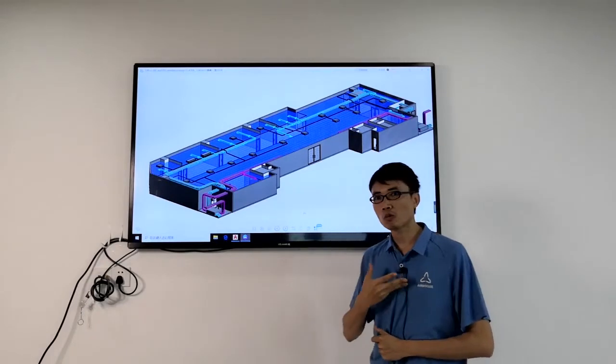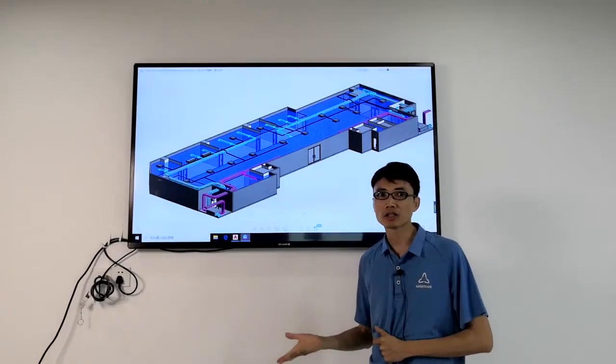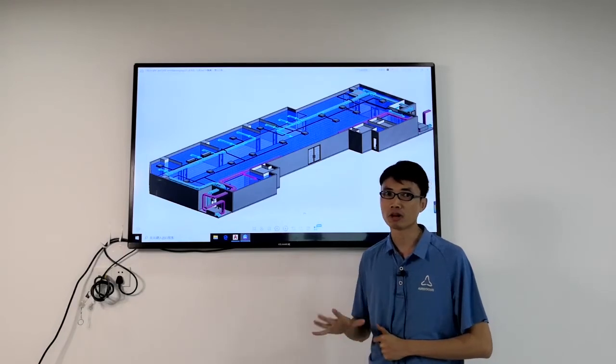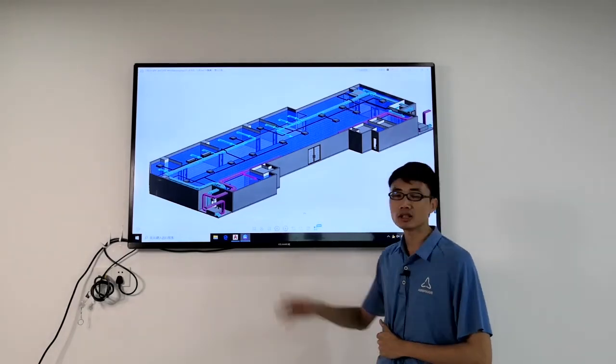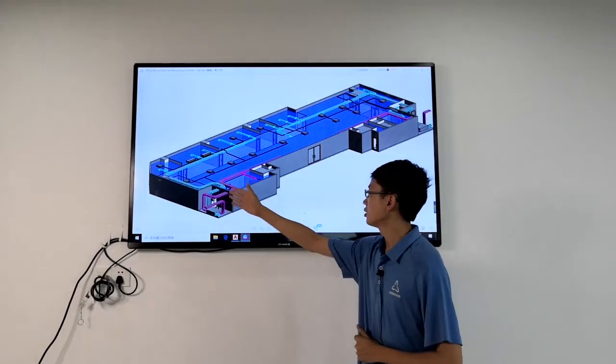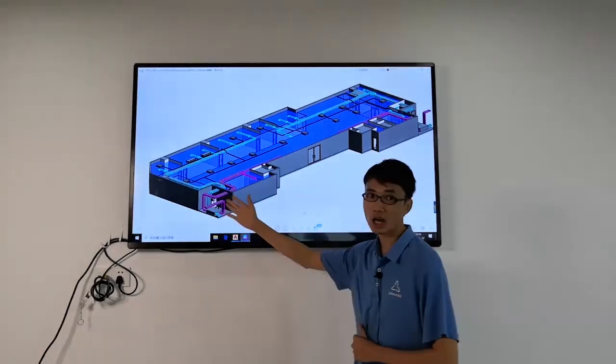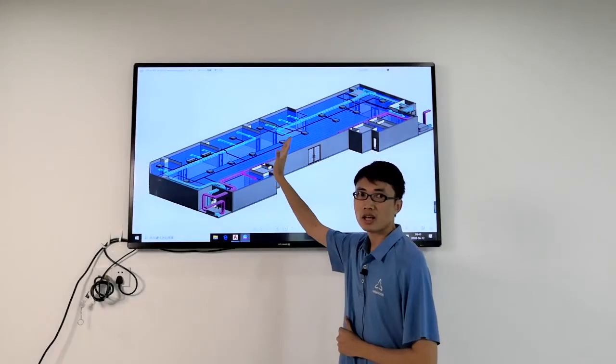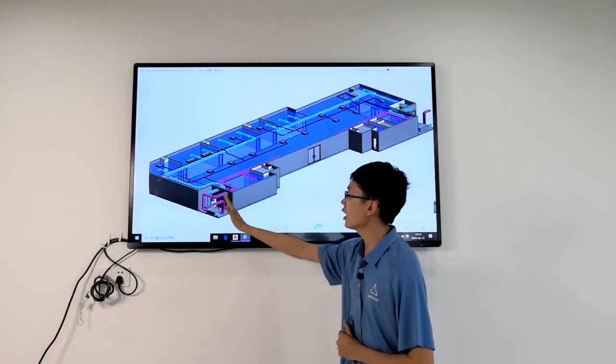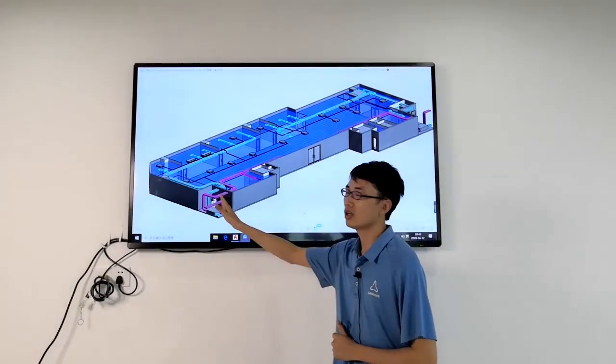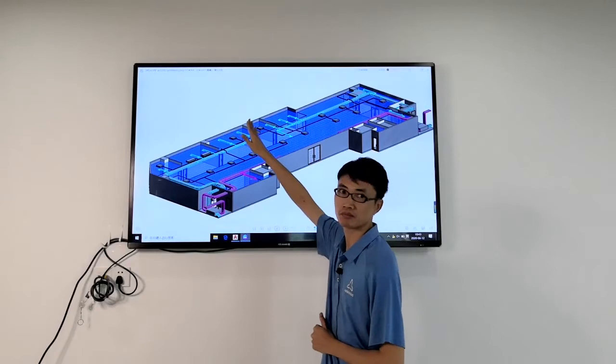You know, our office will work for more than 10 hours per day, and the summer here in Guangzhou is very hot. During the working time, the energy recovery air handling units, the ERV, will recover the energy from the exhaust air and preheat or pre-cool the fresh air before sending it into indoor.